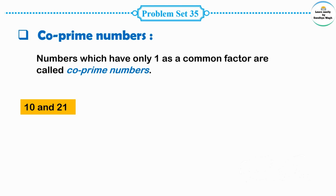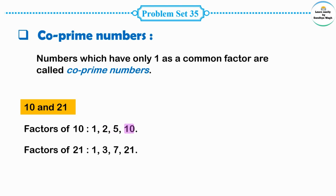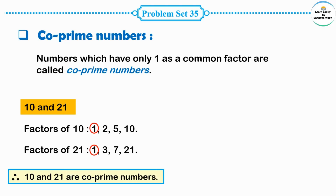Let us understand through an example. Take two numbers: 10 and 21. Are these two numbers co-prime numbers? First, let us write the factors of 10: 1, 2, 5, and 10. Factors of 21: 1, 3, 7, and 21. The common factor in both is only 1. There is no other common factor of 10 and 21, so 10 and 21 are co-prime numbers.